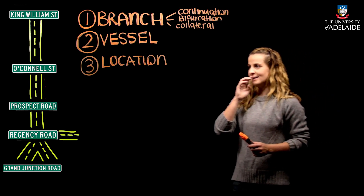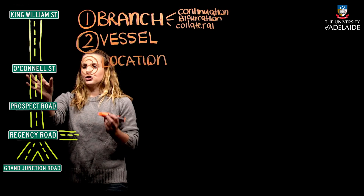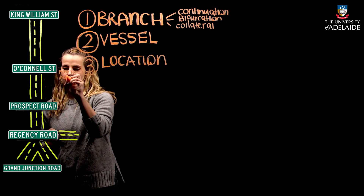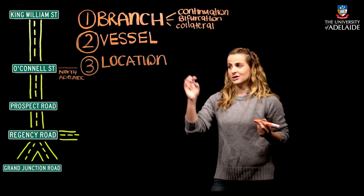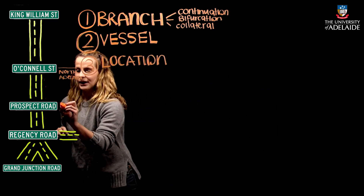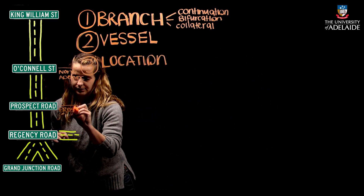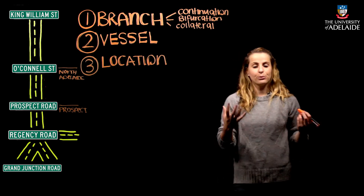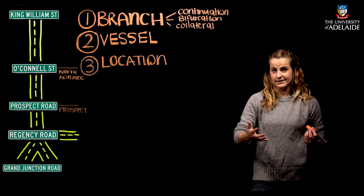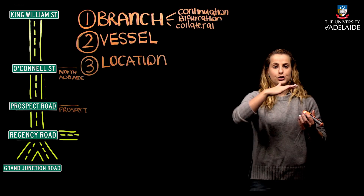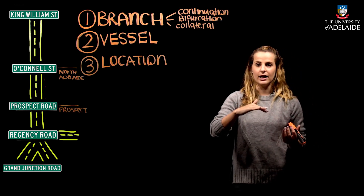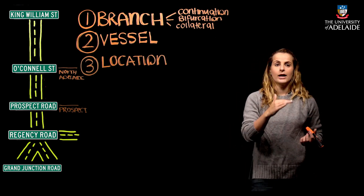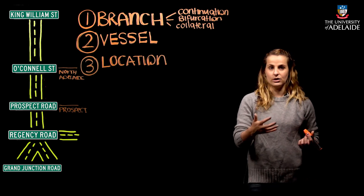The third element — location — is where exactly the vessel changes name or courses. Referring to our diagram, as soon as we hit North Adelaide, King William changes name into O'Connell; as soon as we hit Prospect, O'Connell changes into Prospect Road. The same happens in the body: the external iliac artery reaches the level of the inguinal ligament in the pelvis and then simply continues as the femoral artery. So the anatomical landmark or location here is the inguinal ligament.